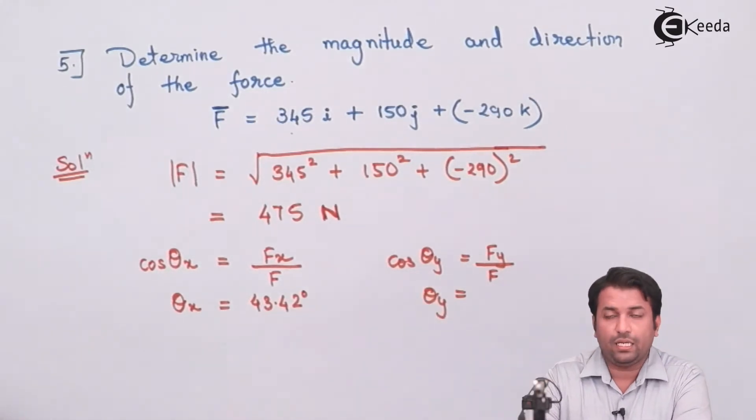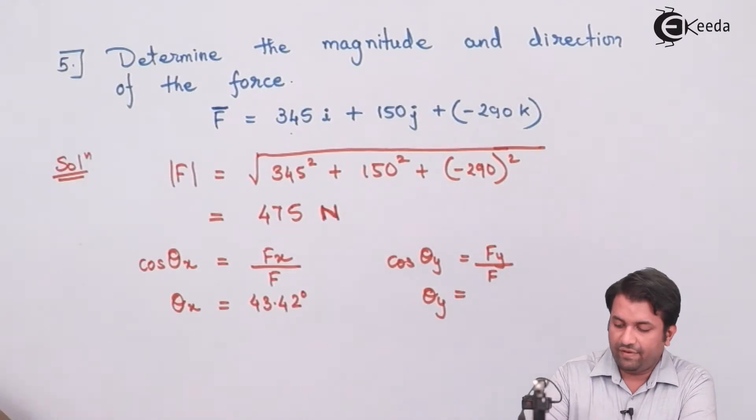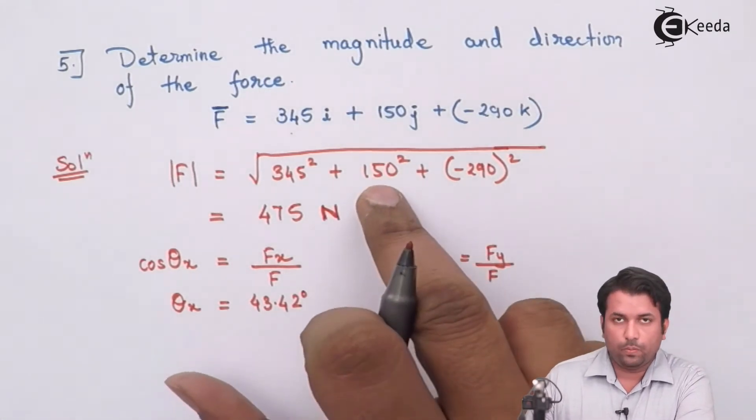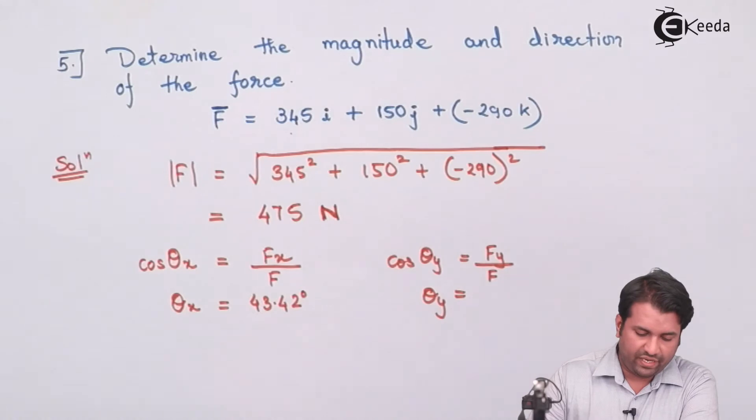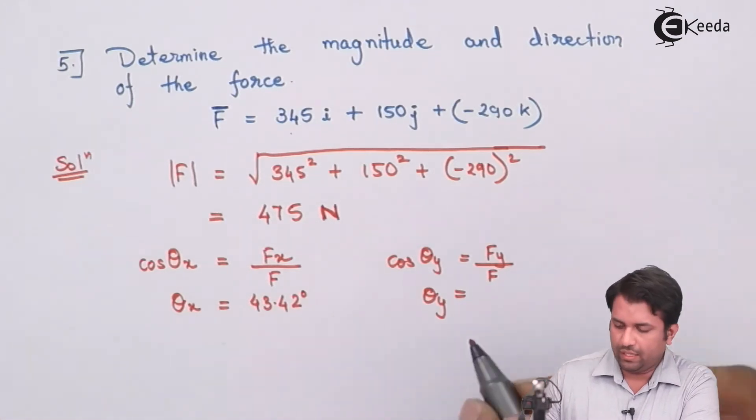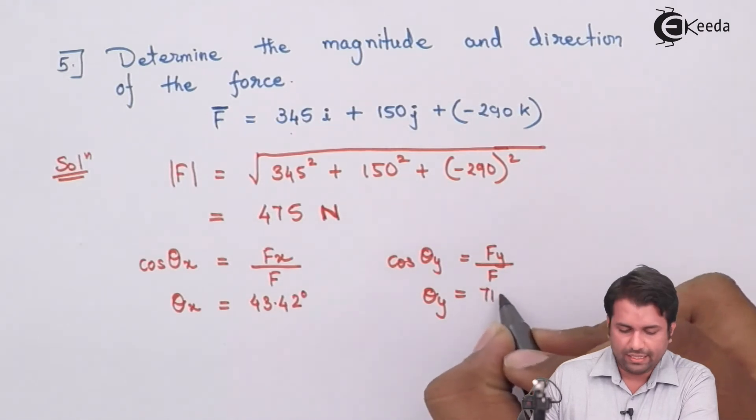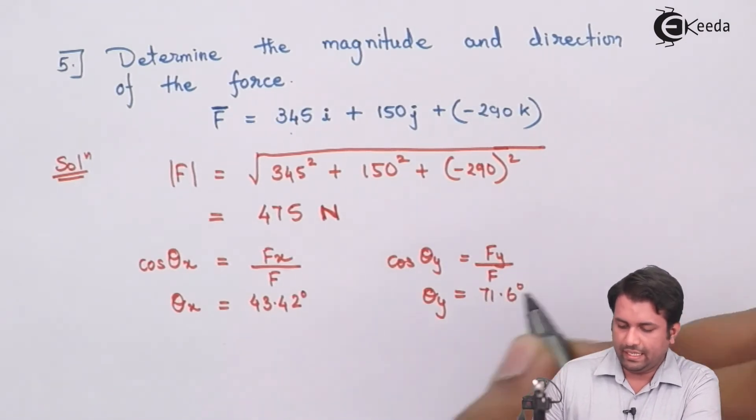Now, to find out the angle along the Y axis, we know the magnitude or the component along Y, that is 150, and the magnitude as well, that is 475. So, in this case, the angle is coming out as 71.6 degrees.